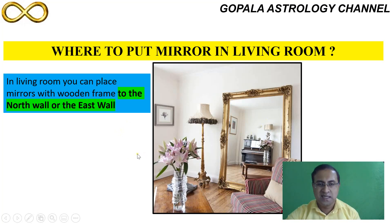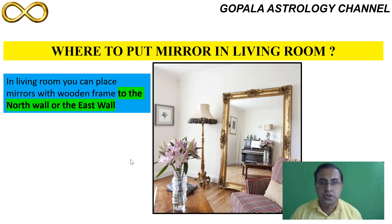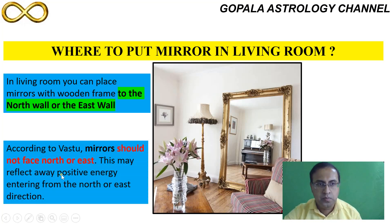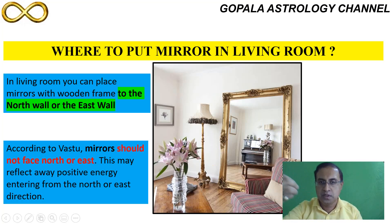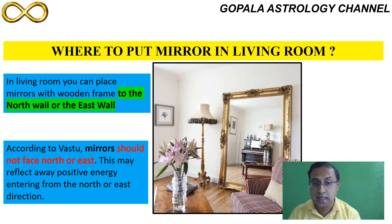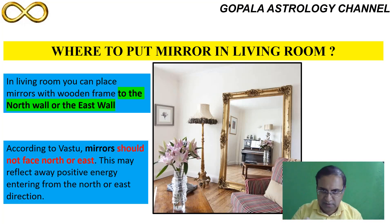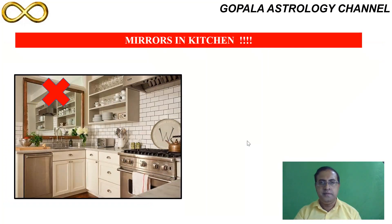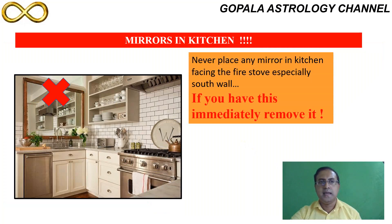Please understand: whatever the mirror is reflecting in front of it should not be something negative, like clutter — it should be clear. Please do not put the mirror directly in front of the main door, because the main door is supposed to bring in a lot of positive energy. If you place the mirror right in front of the main door, whatever positive energy comes in gets reflected back. I have seen this in many people's houses during Vastu consultations — the first thing I ask them is to remove that mirror.